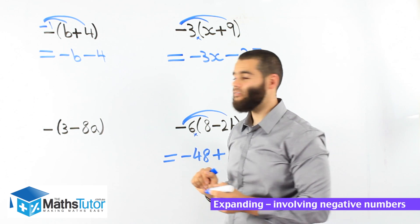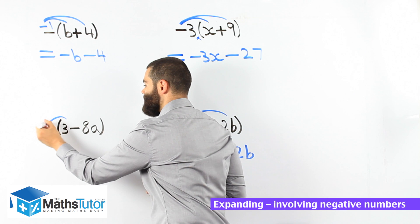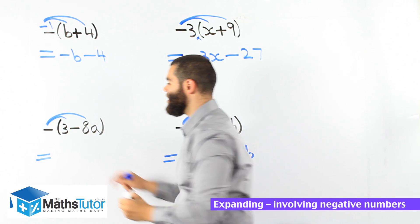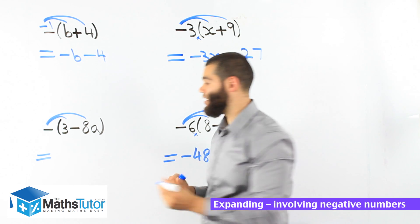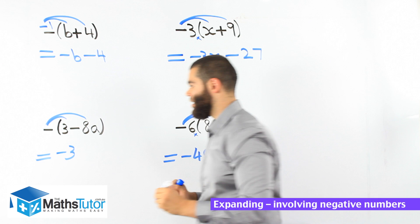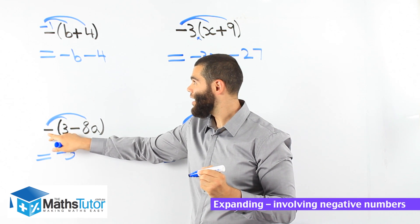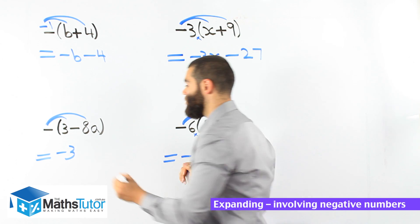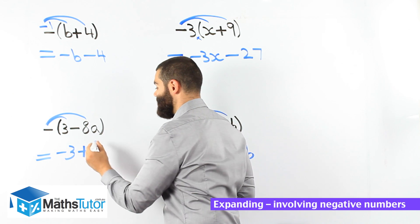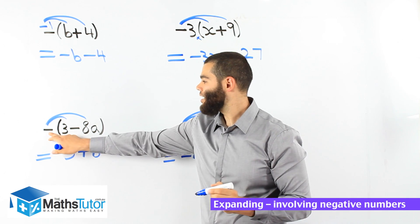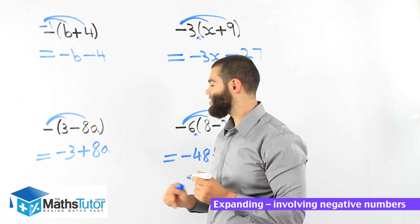Once again we have negative, then open bracket 3 minus 8a, close bracket. We're asked to expand, so we multiply the outside with everything inside — and we know there's an invisible negative 1. Negative 1 times 3 is negative 3. Then negative 1 times negative 8a — two negatives become a positive — so negative 1 times negative 8a is positive 8a. Our answer: minus 3 plus 8a.